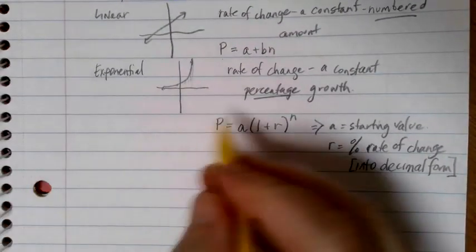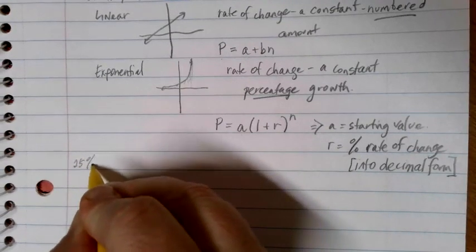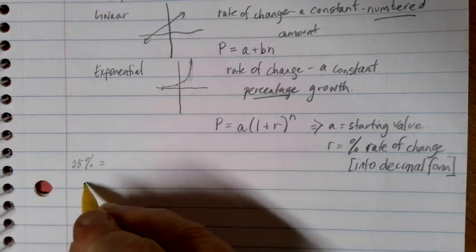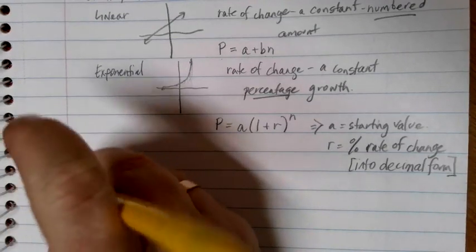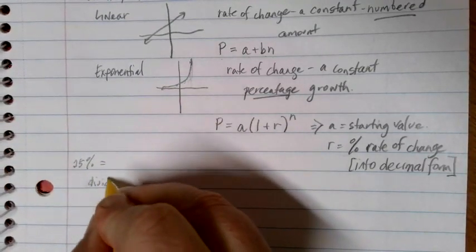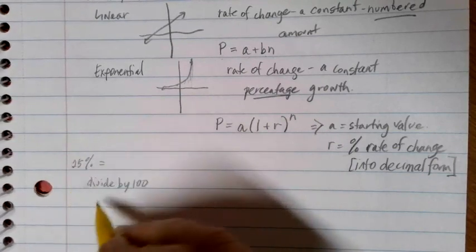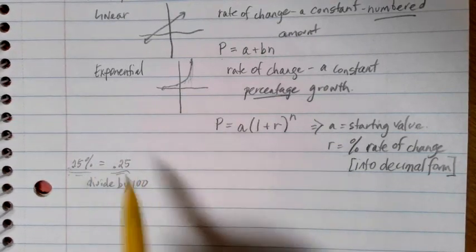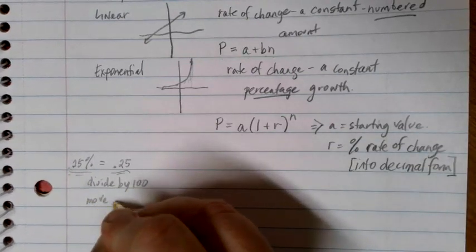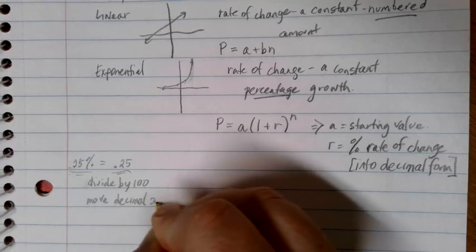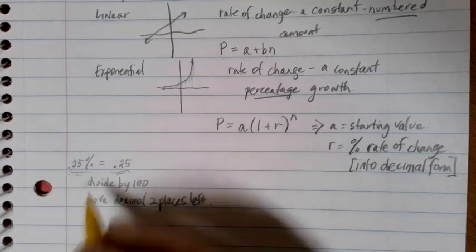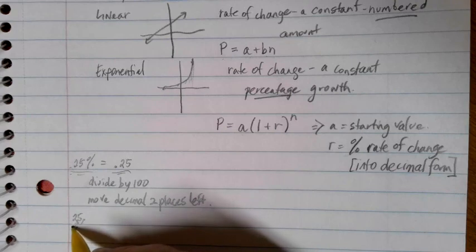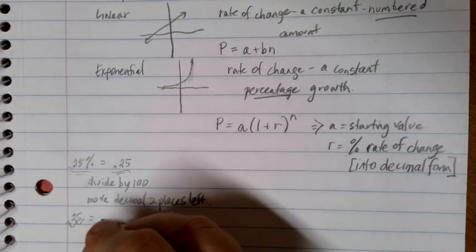Now, quick reminder about how to do that. Let's say that we started with something that was like a 25% growth rate. If I wanted to write this in its decimal form, I can divide by 100. Percent means per 100, so I can divide by 100 on your calculator, and 25 divided by 100 is going to give me 0.25. So the decimal form of 25% is 0.25. You can also move the decimal two places to the left. So here, if I have 25%, the decimal is at the end in this number. If I move it two places to the left, that's the same as dividing by 100, and I get 0.25.